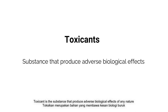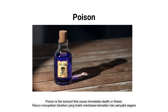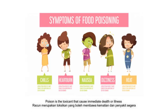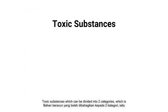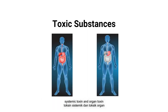Toxicons is the substance that produces adverse biological effects of any nature. Poison is the toxicant that causes immediate death or illness when experienced in very small amounts. Toxic substances can be divided into two categories, which are systemic toxin and organ toxin.